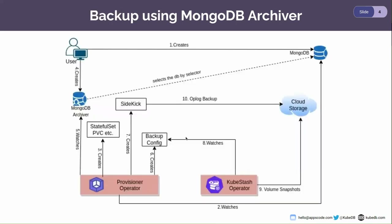Now we'll see how backup works using MongoDB Archiver. This is the flow of the backup. The user first creates a MongoDB database. This database is watched by the KubeDB provisioner operator. The operator watches this MongoDB and creates the components such as stateful set, PVCs, services, and all the other components needed to function the database properly. Then the user creates the MongoDB Archiver custom resource.